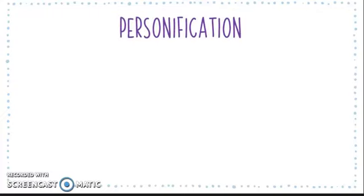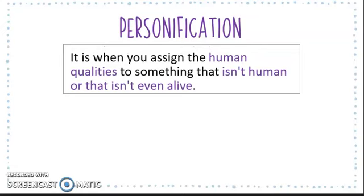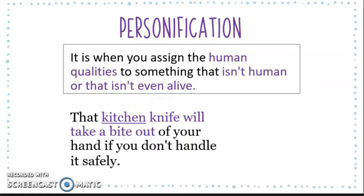I would also like to add two more figures of speech. Aside from simile and metaphor, we have personification. Personification is when you assign human qualities to something that isn't human or isn't even alive. For example: 'That kitchen knife will take a bite out of your hand if you don't handle it safely.' Notice how the kitchen knife is given the human quality of taking a bite. That's personification — giving human qualities to something that is not human or not alive.